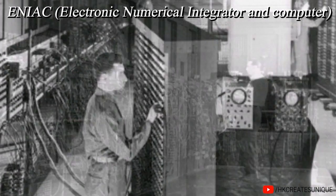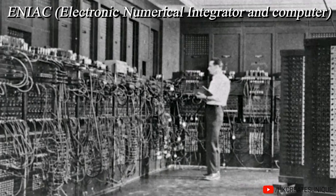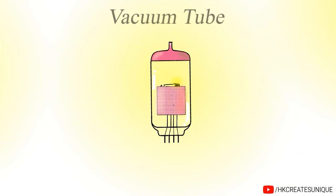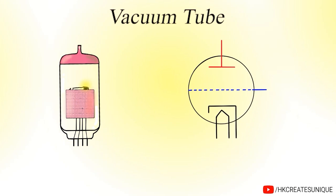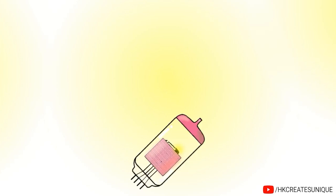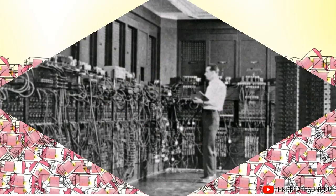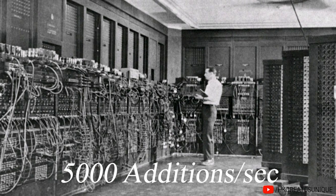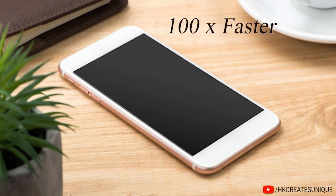The ENIAC built in 1945 was the first electronic digital computer. It was a massive computer. It used vacuum tubes to perform calculations and had 18,000 vacuum tubes. The machine could perform 5,000 additions per second. For comparison, a modern smartphone is about 100 times faster than the ENIAC.